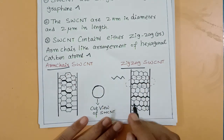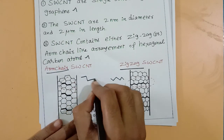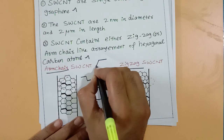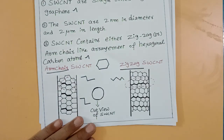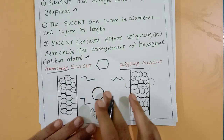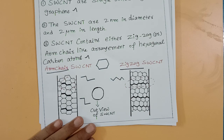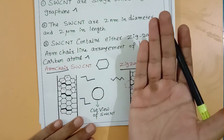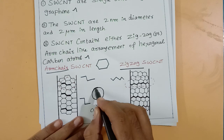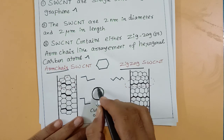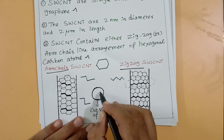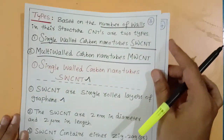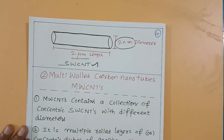So there are two arrangements — the armchair model and the zigzag model — for hexagonal carbon atoms in single-walled carbon nanotubes. Single-walled carbon nanotubes contain only one wall, a unilayered wall. That is about single-walled carbon nanotubes.